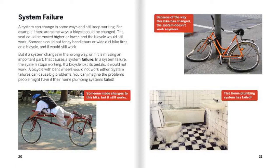System failure. A system can change in some ways and still keep working. For example, there are some ways a bicycle can be changed — the seat could be moved higher or lower and the bicycle would still work. Someone can put fancy handlebars or wide dirt bike tires on a bicycle and it would still work. But if a system changes in the wrong way or if it is missing an important part, that causes a system failure. In a system failure, the system stops working. If a bicycle lost its pedals, it would not work. A bicycle with bent wheels would not work either. System failures can cause big problems. You can imagine the problems people might have if their home plumbing system failed. Someone made changes to this bike, but it still works. Because of the way this bike has changed, the system doesn't work anymore. This home plumbing system has failed.